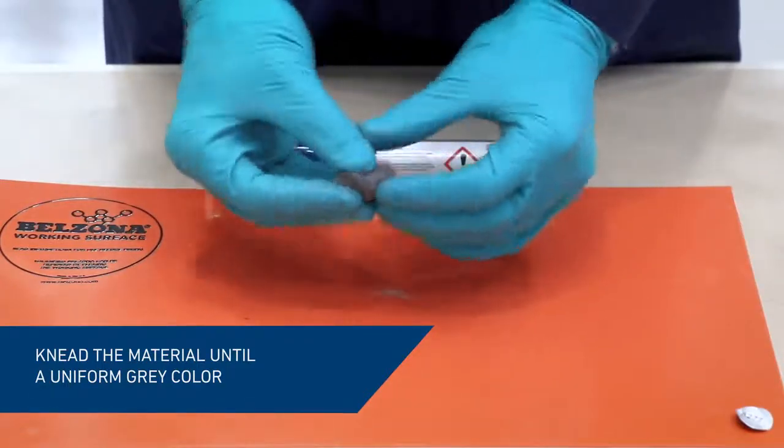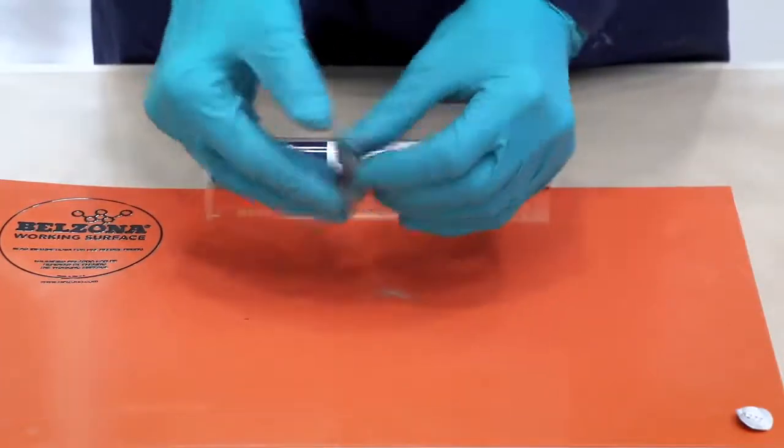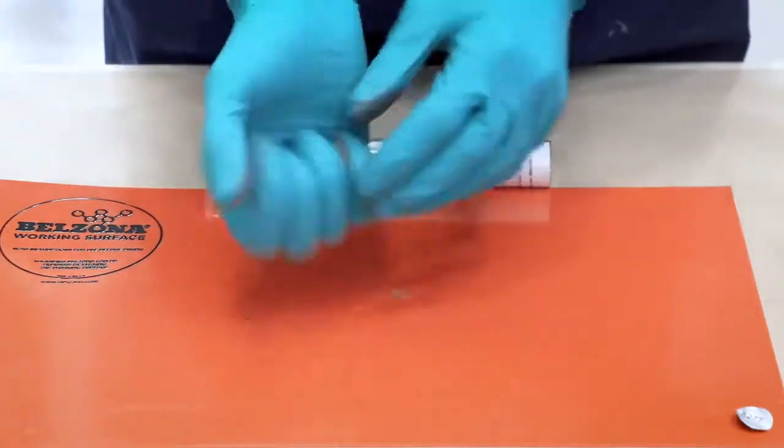Belzona 9611 is used in combination with Belzona metal systems to create permanent repairs.